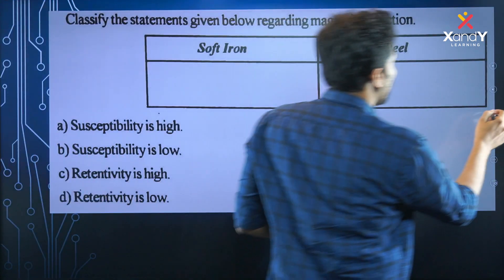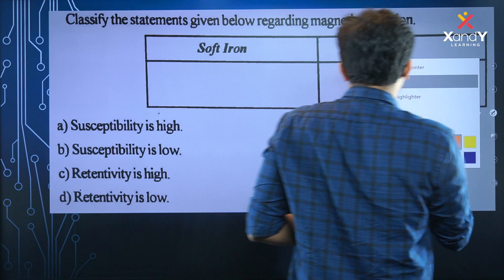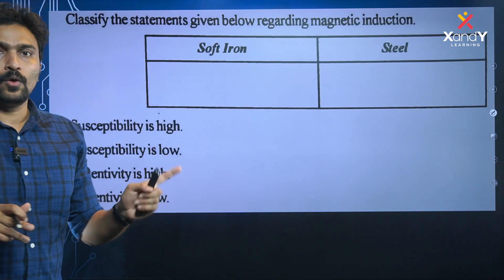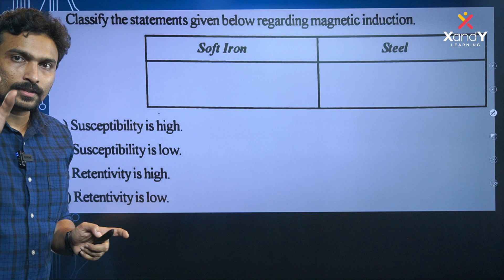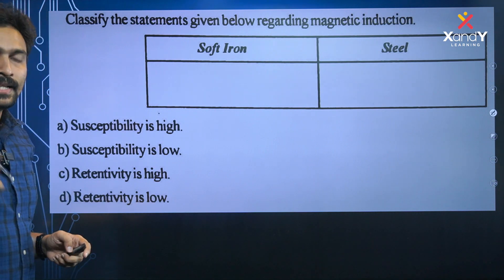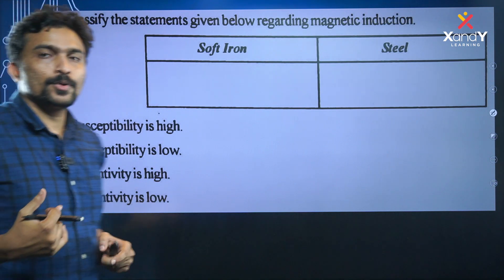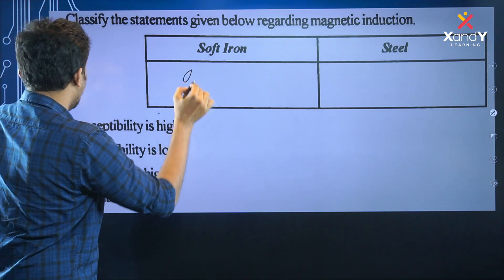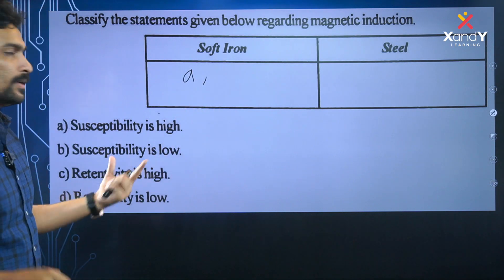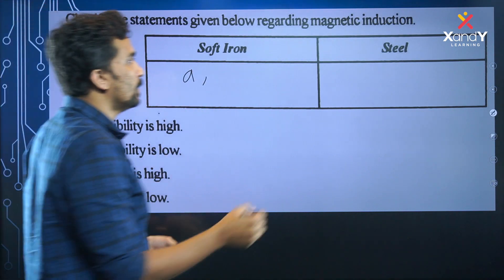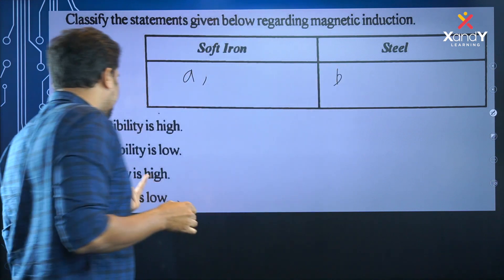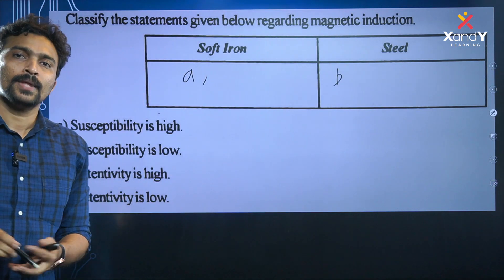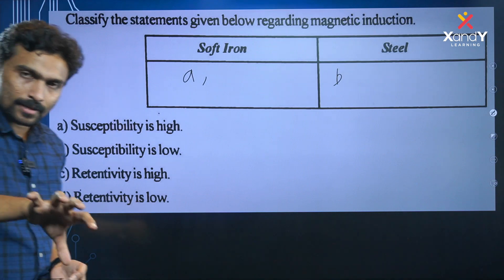Classify the statements. These statements are classified. Susceptibility is high — already in the first case. Electromagnet is a big magnet. That is soft material. Susceptibility is low — that is steel. Retentivity is the same. What is retentivity? That is the magnetic field range.